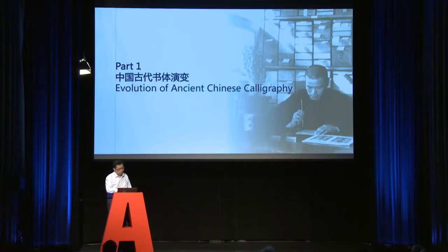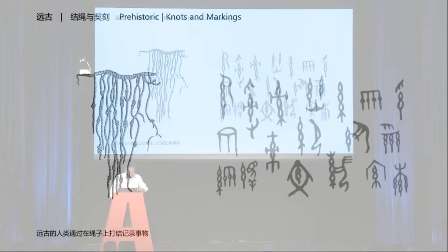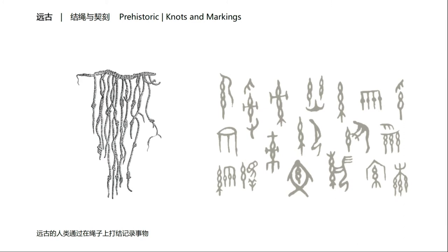A particular culture impacts a unique attribute to its own writing system. The history of Chinese characters, in short, is a history of Chinese calligraphy. Part one is the evolution of ancient Chinese calligraphy. Human beings in ancient times maybe had language but they had no characters. They tried to record things by knots on rope, and we can find a lot of rope motifs in later Chinese characters.